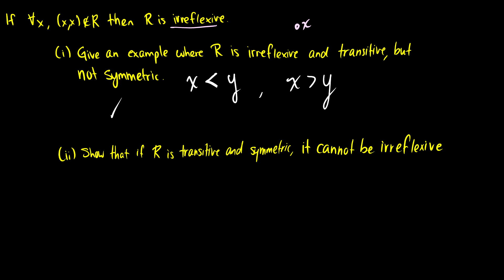Part two, show that if R is transitive and symmetric, it cannot be irreflexive. This is a little bit trickier. First, we have to make some assumptions here.